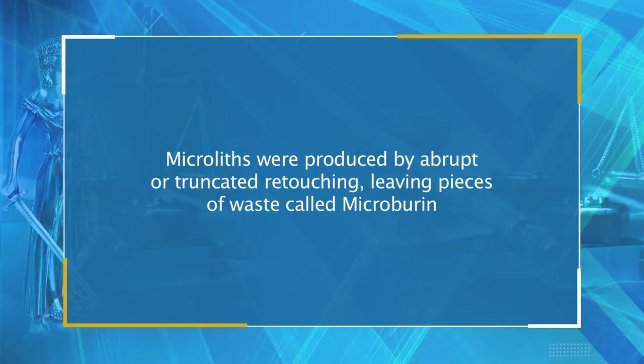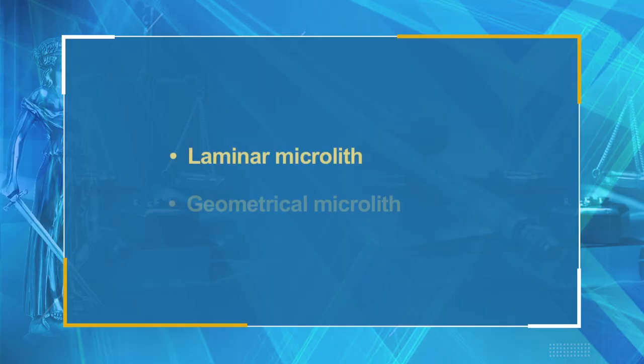Microliths were produced by abrupt or truncated retouching, leaving pieces of waste called microburins. There are two types of microliths: laminar microliths and geometrical microliths. Laminar microliths are usually larger than geometrical microliths, while geometrical microliths are the typical tools of the Mesolithic period and are smaller in size.